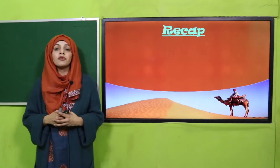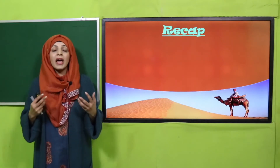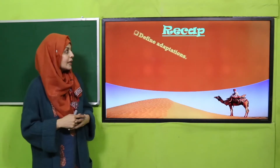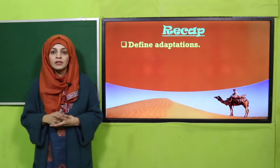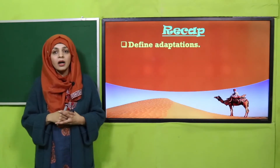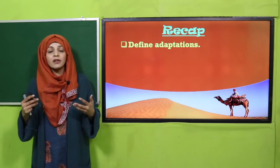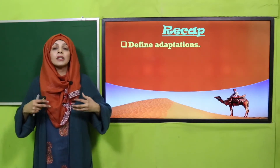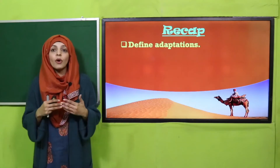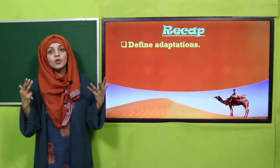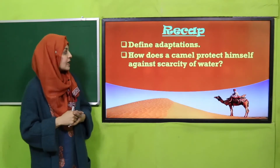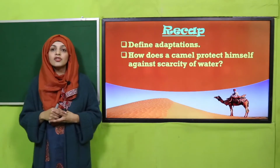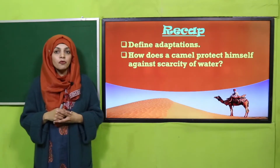We are discussing different adaptations — how animals and plants are adapted to their habitat or their environment. Adaptations are when plants and animals become better able to live in their environment or habitat. Jab wo apne aap ko is kabil bana lete hain ki wo ek environment mein survive kar sake — basically, those are the adaptations. Now quickly tell me: how does a camel protect himself against scarcity of water? It stores its food or water in its hump — very good.